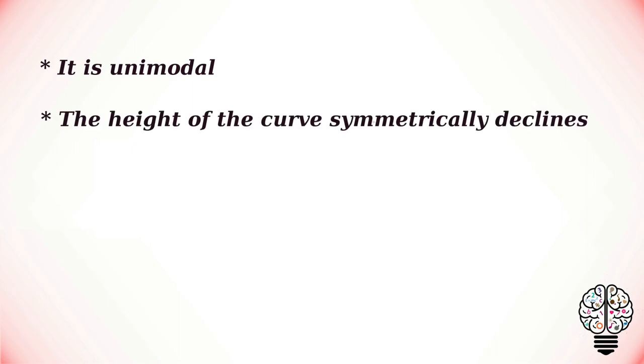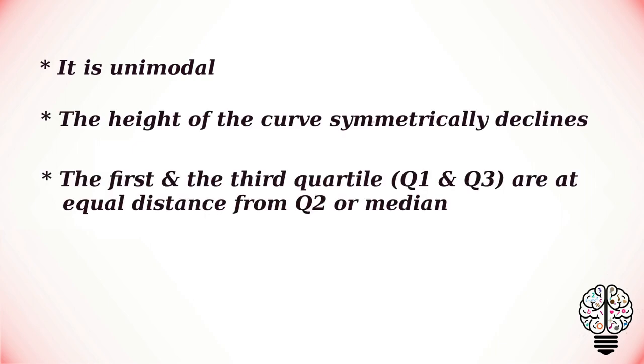The height of the curve symmetrically declines. The first and the third quartile, that is, Q1 and Q3 are at equal distance from Q2 or median.